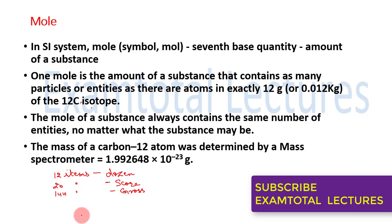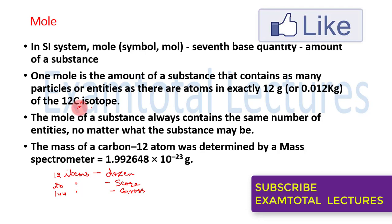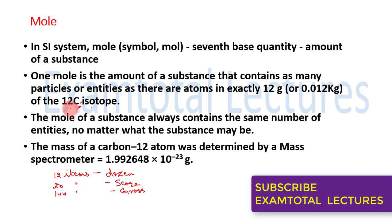One mole is the amount of a substance that contains as many particles or entities as there are atoms in exactly 12 grams, or 0.012 kg, of the carbon-12 isotope. We studied carbon isotopes in our last lecture — isotopes like 12, 13, and 14. So one mole refers to the number of atoms, molecules, ions, or any particle required in our calculation.